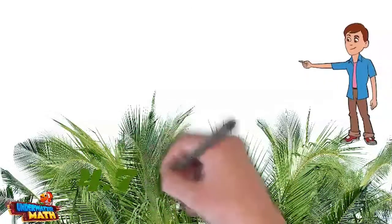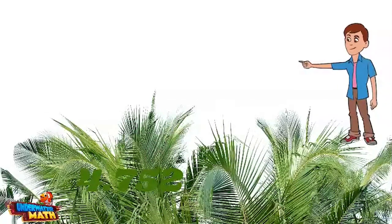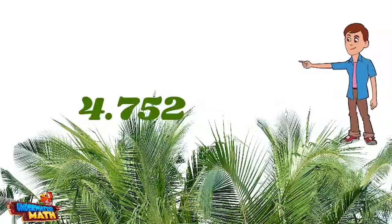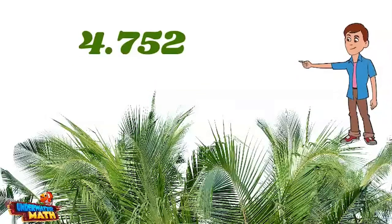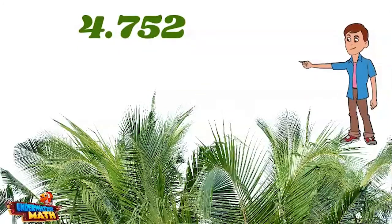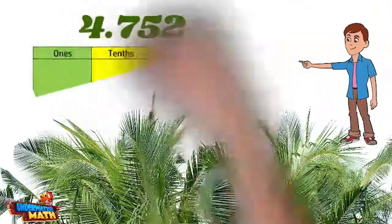Oh, I see one — shush, we don't want to scare it away. It looks like we've found the number four and seven hundred and fifty-two thousandths. Let's take a closer look at the value of each place.